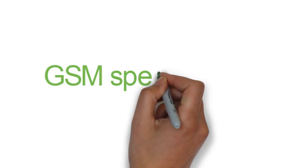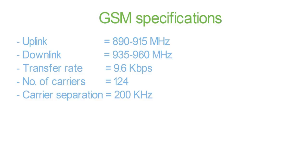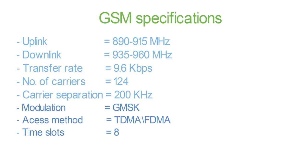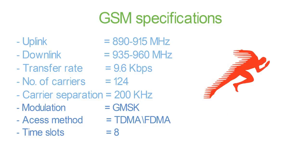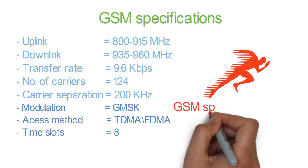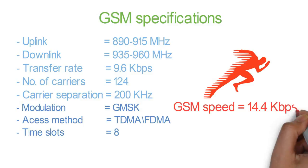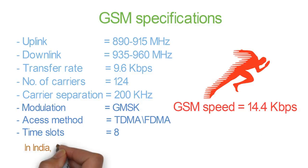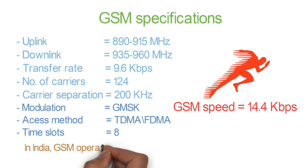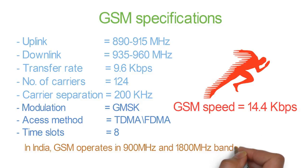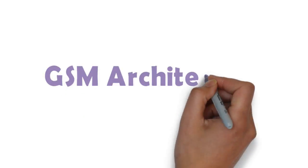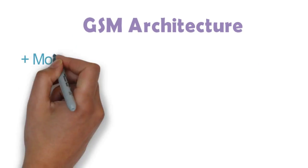GSM had certain specifications like uplink, downlink, transfer rate, etc., to carry information. Mainly, it uses GMSK digital modulation and TDMA access method. GSM data speed was approximately 14.4 kilobits per second. GSM uses different frequency bands in different regions. In India, it was 900 MHz and 1800 MHz.